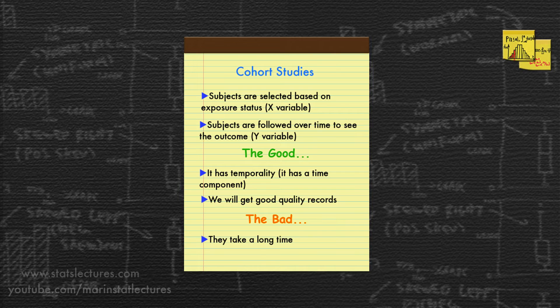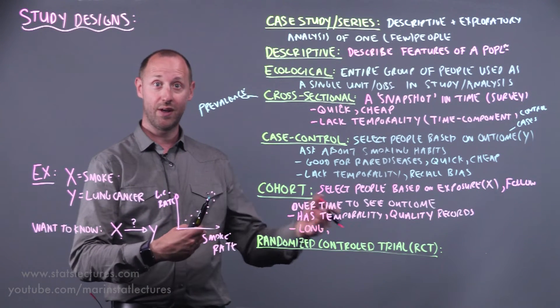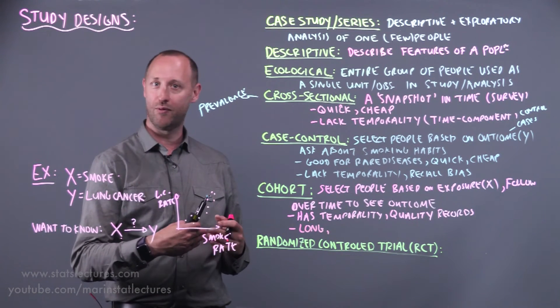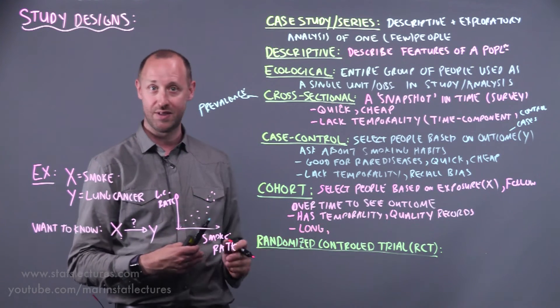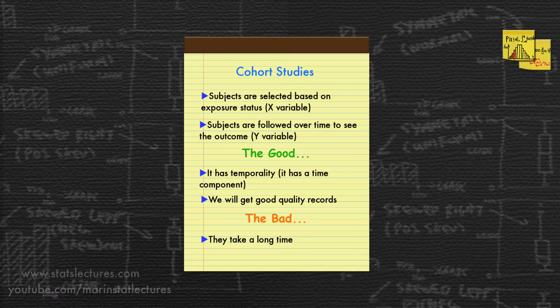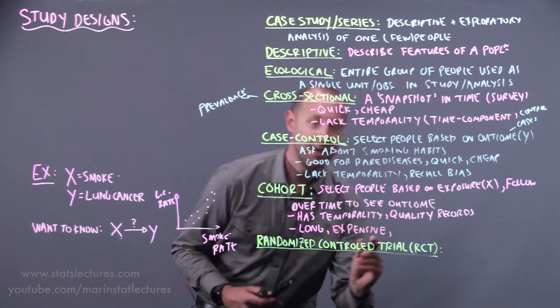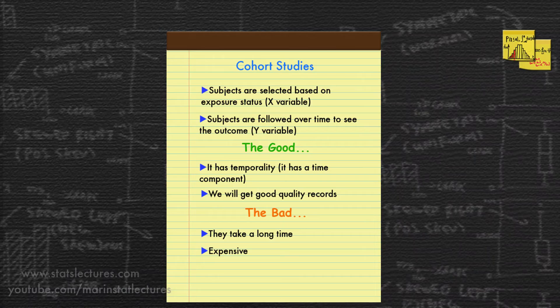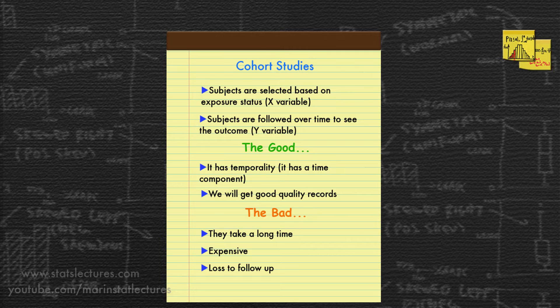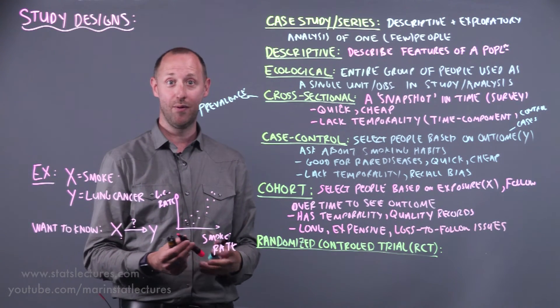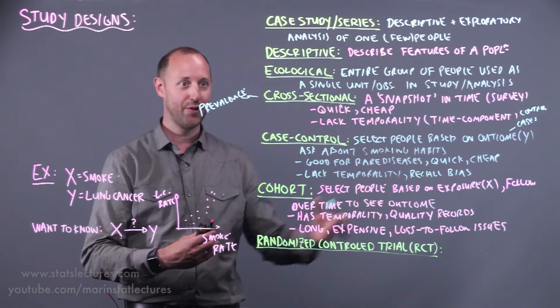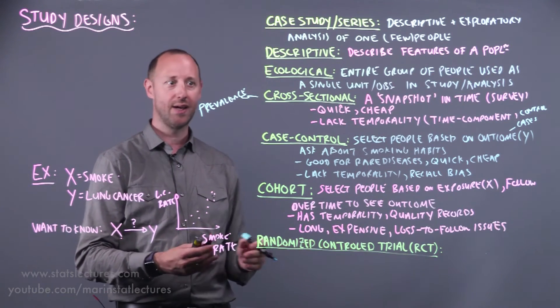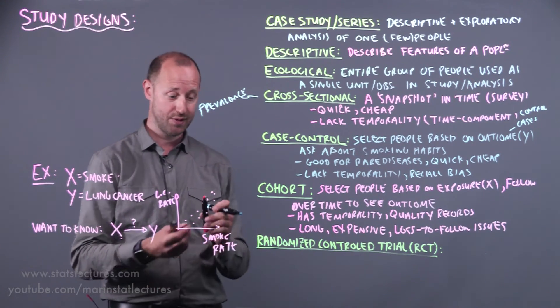Some of the negatives is that they take a long time. If we're looking at smoking and lung cancer, we might need to follow people for 10, 20, 30 years before we see something like lung cancer showing up. They're expensive, and again this involves following people over a large period of time. It's going to cost money. And there's loss to follow-up issues. If you're going to try and follow people for 5 years, 10 years, 20 years, 30 years, you're going to lose people along the way and this can influence the results.